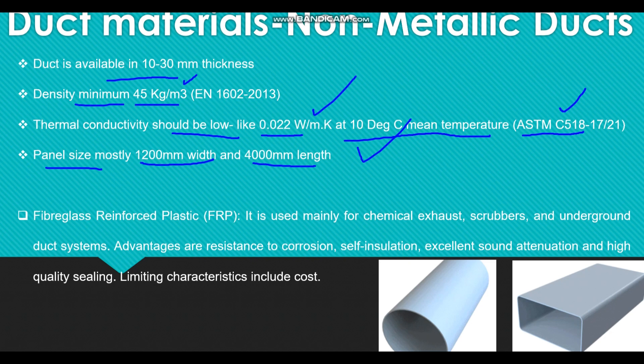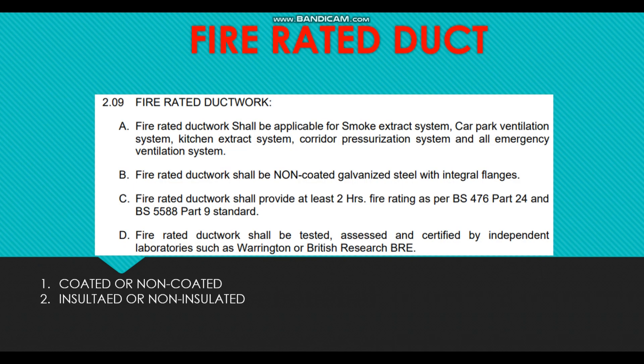The next duct type is mostly seen in underground ductwork — for example, underground seating areas. For such applications, we mostly use fiberglass reinforced plastic duct, or FRP duct. The main advantage is corrosion resistance, making it suitable for underground duct systems. It also provides excellent sound attenuation and high-quality seating. FRP duct is normally available in both rectangular and circular shapes.